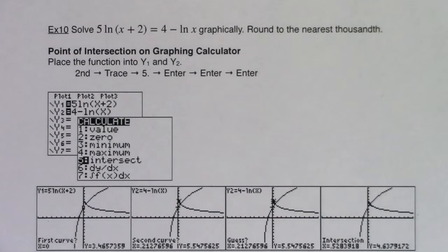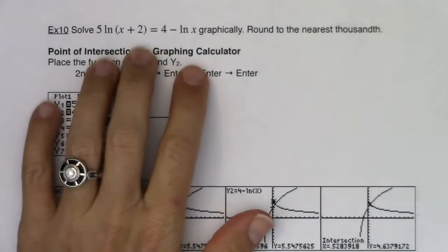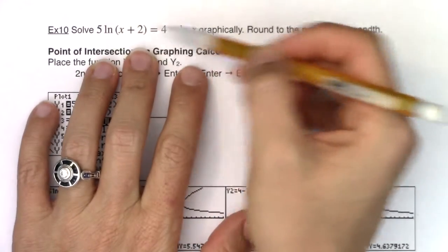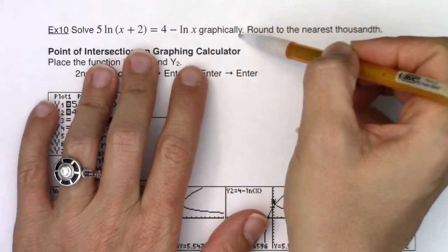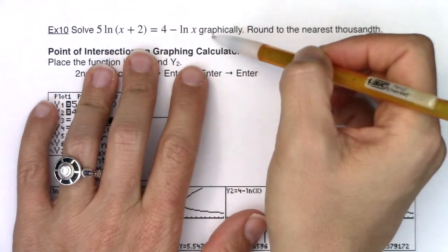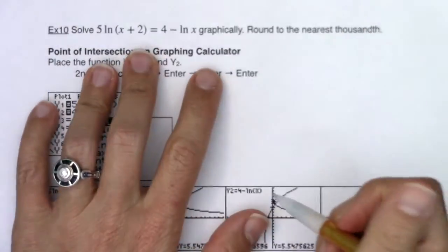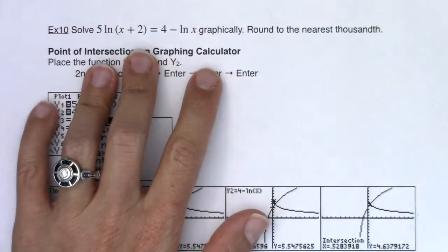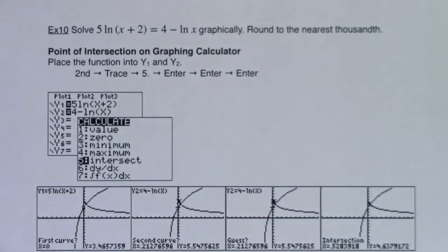Hey Math 31, welcome to example 10. We're going to look at how we can solve this type of logarithmic equation graphically. We did this with exponential equations as well, but now we're going to try it with logarithmic equations and we're going to round our answer to the nearest thousandth.